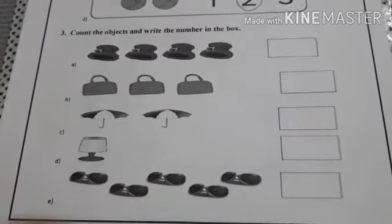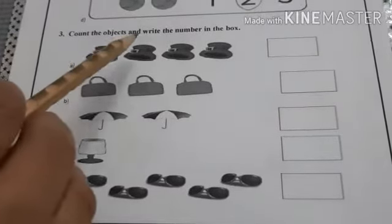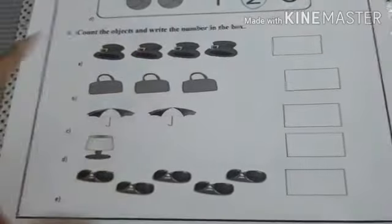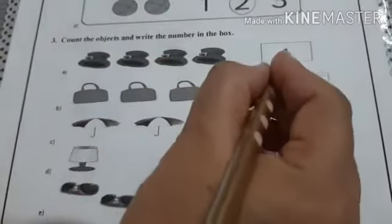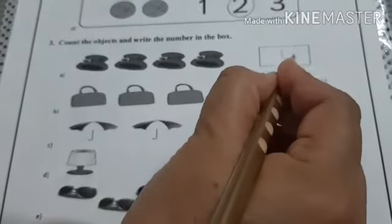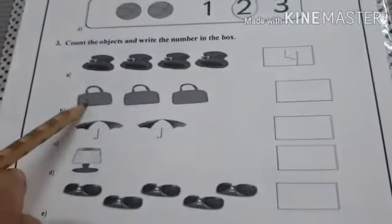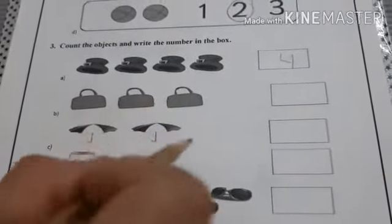Third question says, Count the objects and write the number in the box. Can you count with me? 1, 2, 3, 4. 4 hacks. So we will write number 4. 1, 2, 3. 3 verses.